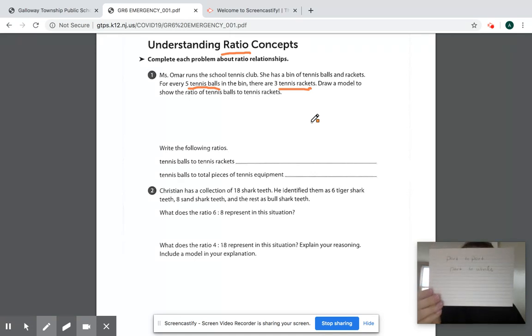So with these two types, sometimes you have to figure out am I doing a part-to-whole or a part-to-part. In this case, they ask for both. So if you look, what is the ratio of tennis balls to tennis rackets?